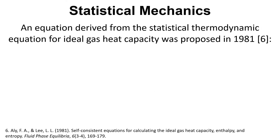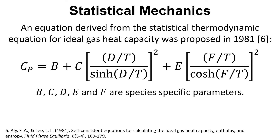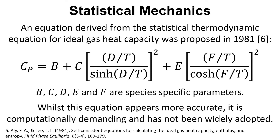There's also an equation that has been derived from statistical thermodynamic theory for the ideal heat capacity of gases, proposed in 1981. There are some species-specific parameters — a little bit more complicated. Whilst this equation appears to be more accurate, it's computationally more demanding and it doesn't appear to have been widely adopted, certainly not in chemical engineering circles, for modeling gas phase heat capacity.